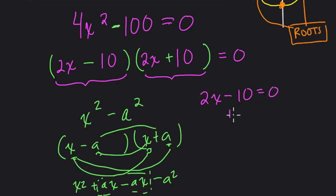2x - 10 = 0. Let's solve for x. Figure out what x value would give us 0 here. We set it up. 2x = 10. Divide by 2 on both sides. The first answer is x = 5.